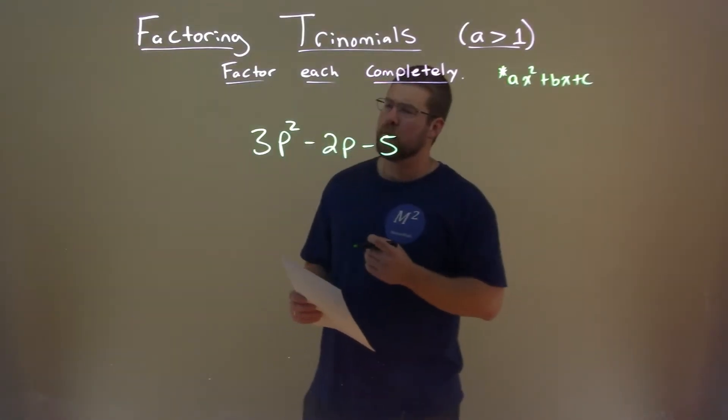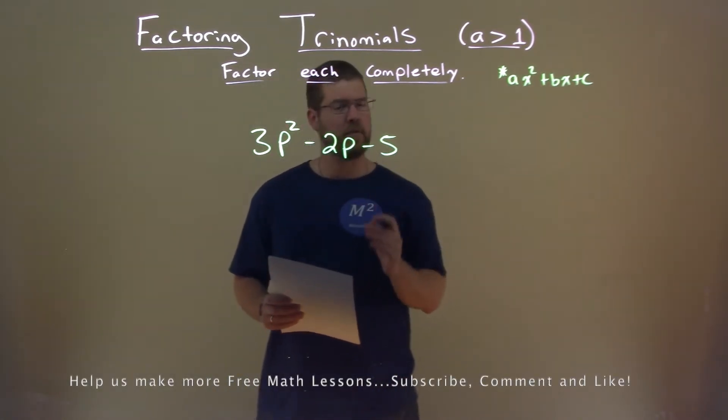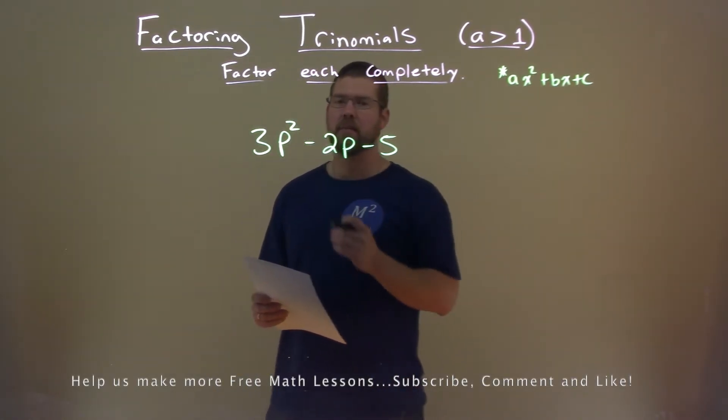We're given this problem here: 3p squared minus 2p minus 5, and we want to factor this completely.